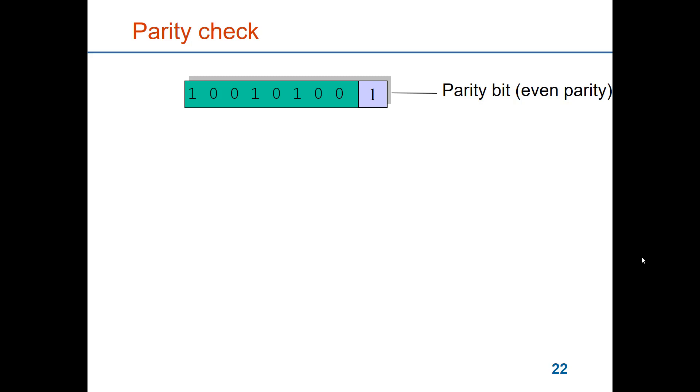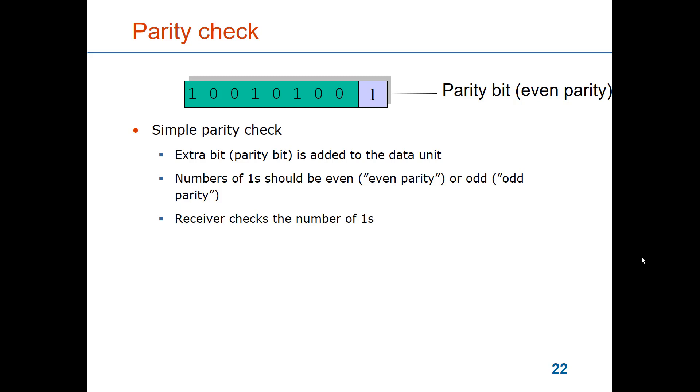So the parity check simply takes the data and counts the number of ones in the data. If you have an even parity, it adds a 1 if the number of ones in the data are odd, so that the total number in the data plus the redundancy becomes an even number. If you have an odd parity, then you should make sure that the number of ones in the data plus the parity bit should become an odd number. It doesn't matter which you choose, even or odd parity.